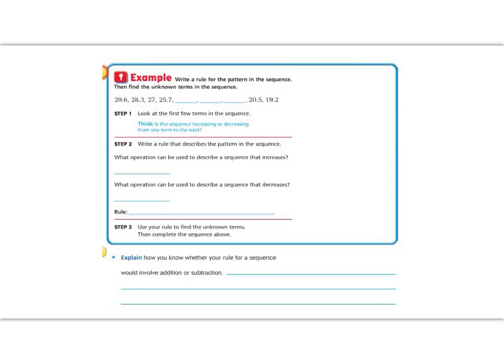Let's continue our lesson with the example at the top of the next page. It says, we are going to write a rule for the pattern in the sequence and then find the unknown terms in the sequence. Step 1 says look at the first few terms. So if we look at the first couple of terms, we can decide if our number is getting bigger or smaller, increasing or decreasing. Well, if we look, we went from 29.6 to 28.3. If we went from 29 to 28, then we are definitely decreasing.